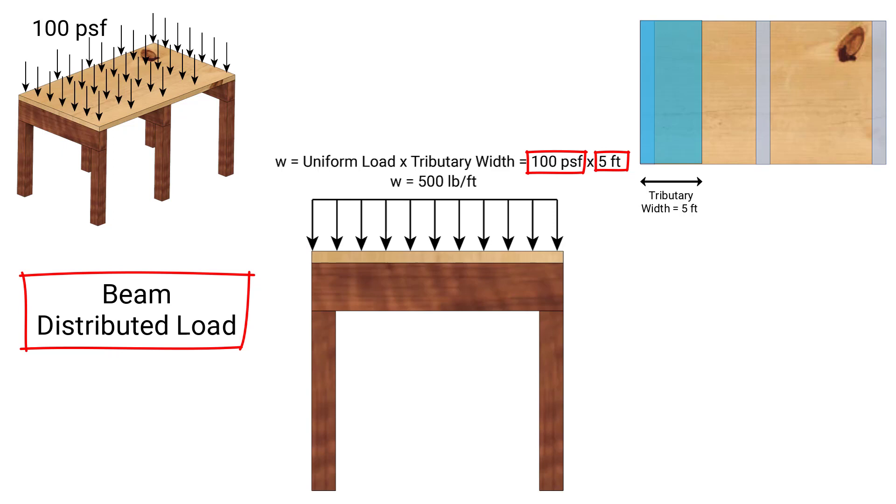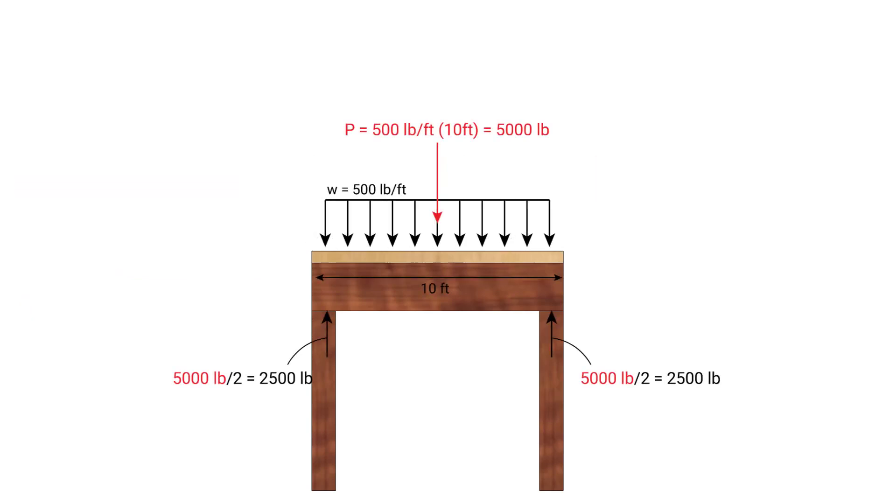So we get a uniform distributed load of 500 pounds per foot acting on the outside beam. We can break down this distributed load into a single concentrated point load that acts at the center of the beam. To do this, we take the distributed load of 500 pounds per foot, we multiply it by the length of the beam, which is 10 feet in this case, and we get 5,000 pounds, that's a concentrated load acting at the center of the beam.